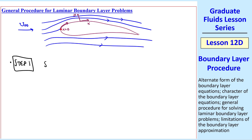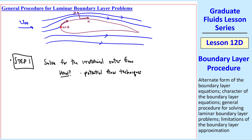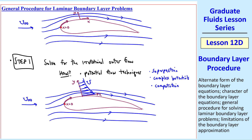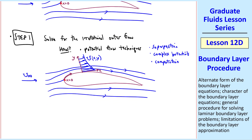Step one is to solve for the irrotational outer flow, using any method available: potential flow techniques discussed previously, superposition, complex potentials, or computational codes such as an Euler code. From our potential flow solution at some location along the wall — ignoring the boundary layer since these solutions are irrotational and don't satisfy the no-slip condition — the outer flow velocity profile gives us capital U as a function of x and y. Also included in step one is to transpose this irrotational outer flow into boundary layer coordinates.